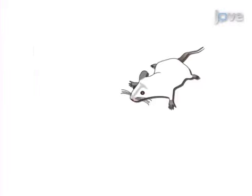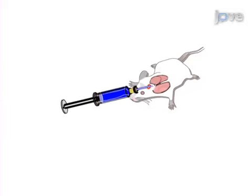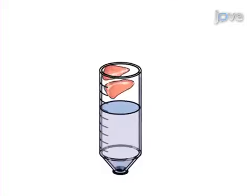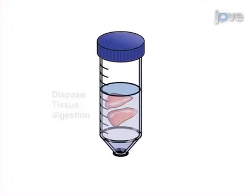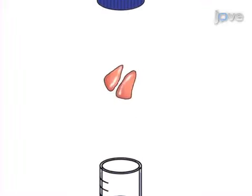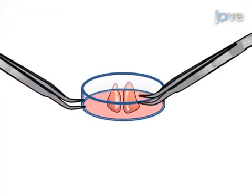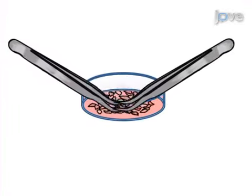First, the lung and trachea of a sacrificed mouse are instilled with a solution of dispase and then agarose. The lung is then removed. After the dispase is allowed to digest the lung, the tissue is manually disintegrated.